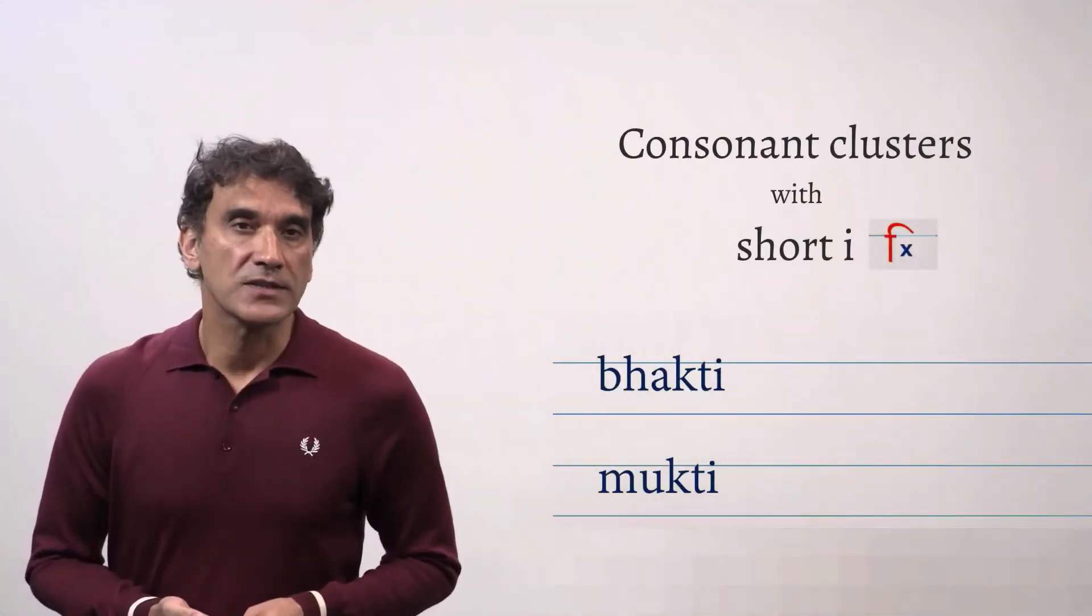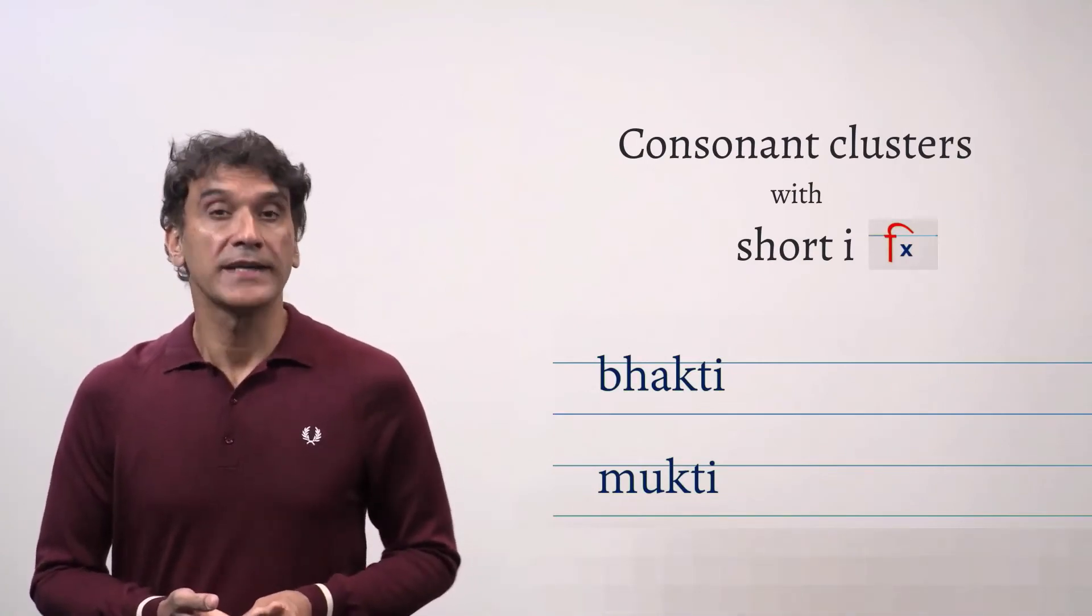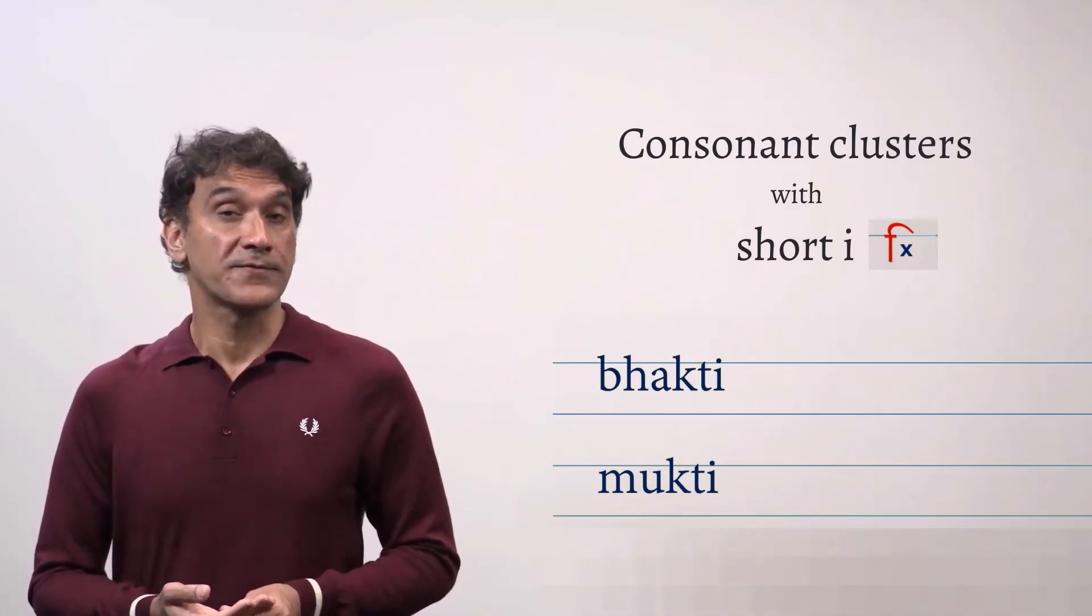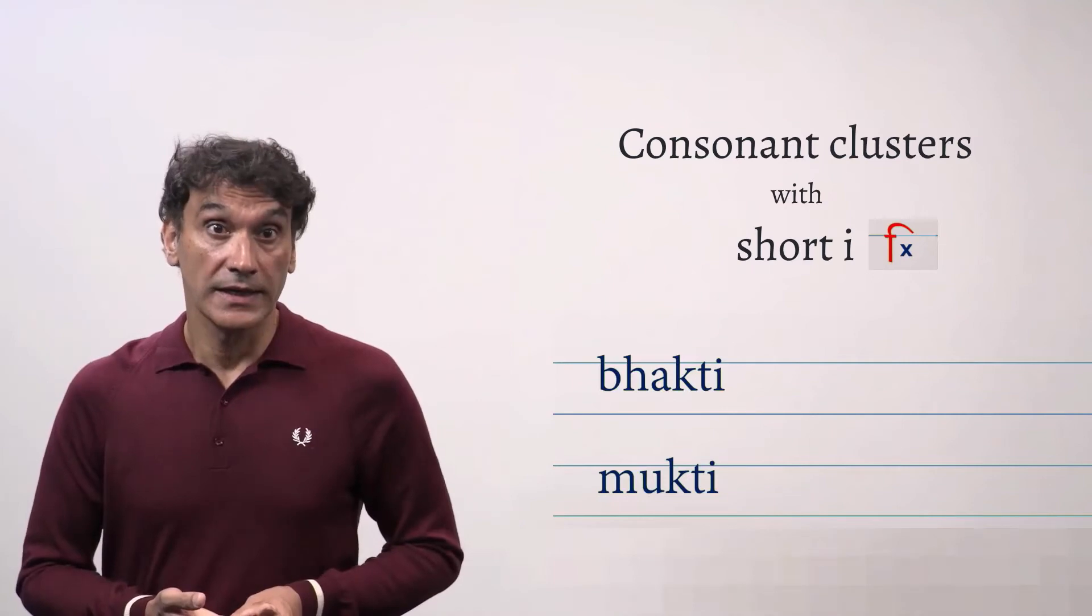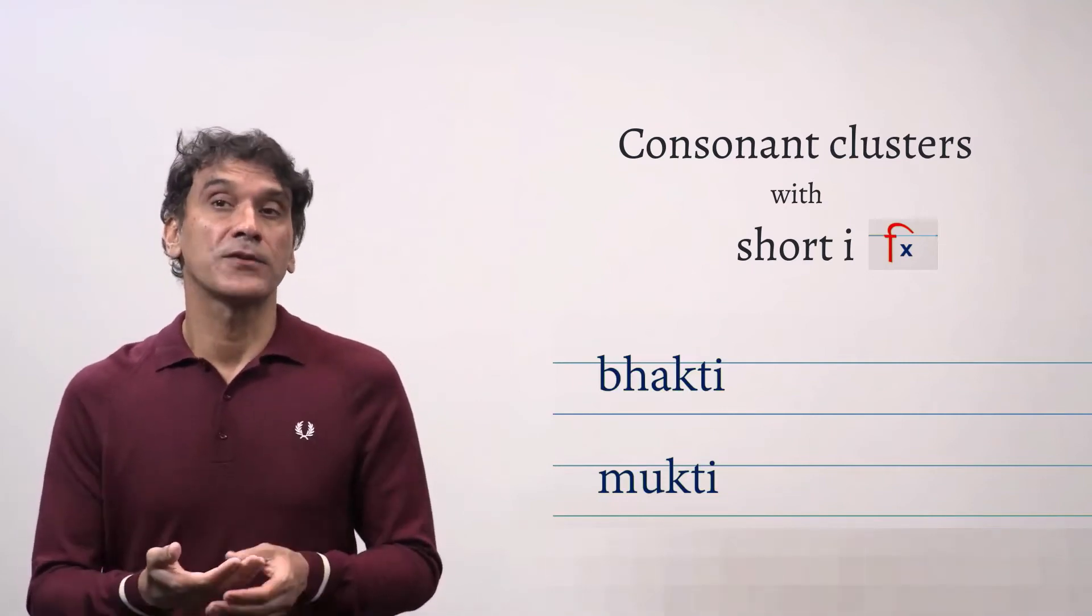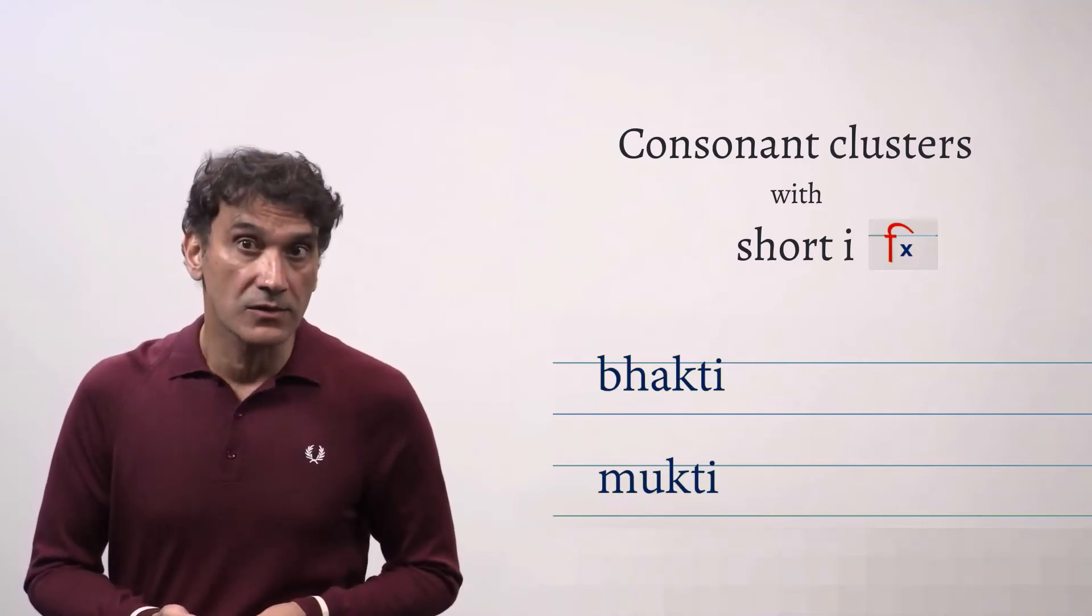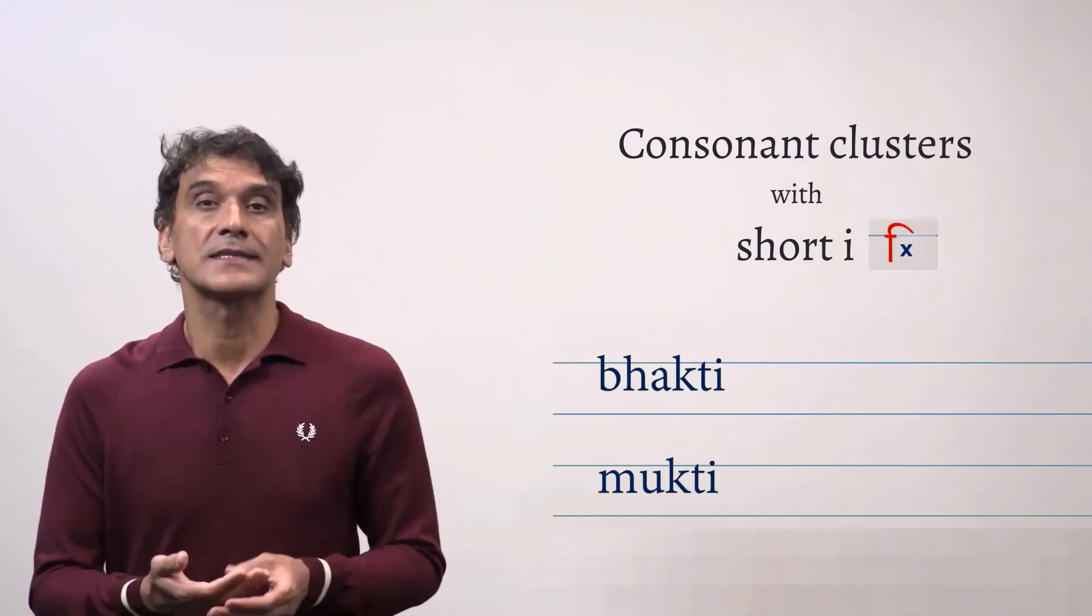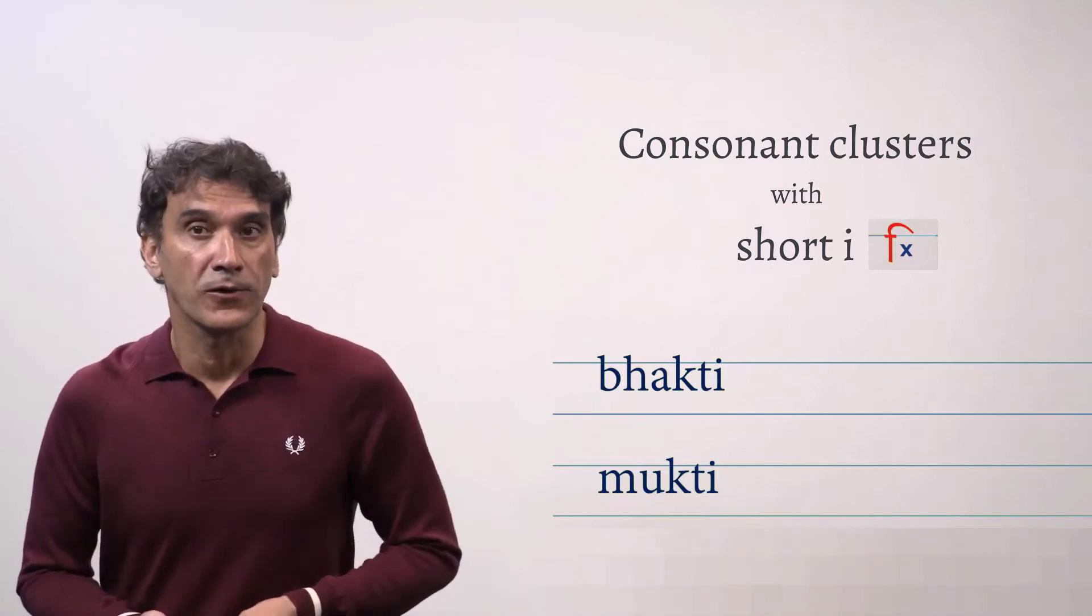Just like in previous consonant-consonant combinations, here too when the consonant cluster is followed by short i, in other words when the consonant cluster has the short i, the matra for short i is written all the way before the entire consonant cluster. Let's take some examples. It will be easier to follow then.